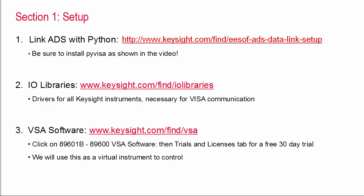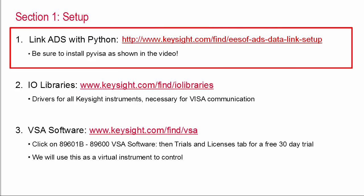First, you'll need to install some free software to get things working. There are several packages to download and install. Step one is to set up the ADS Python data link. This short video will walk you through it. It's pretty straightforward. Just watch the video and follow the steps. One note, be sure to install the pyvisa package like it shows in the video. We'll definitely need that for instrument communication.